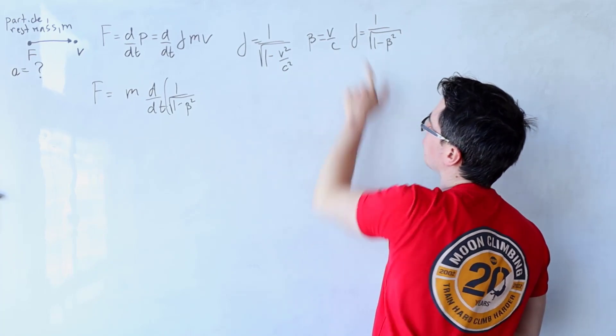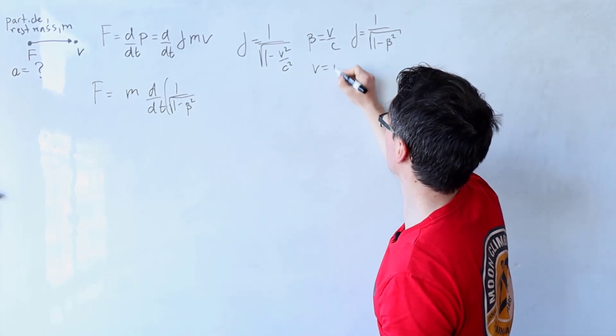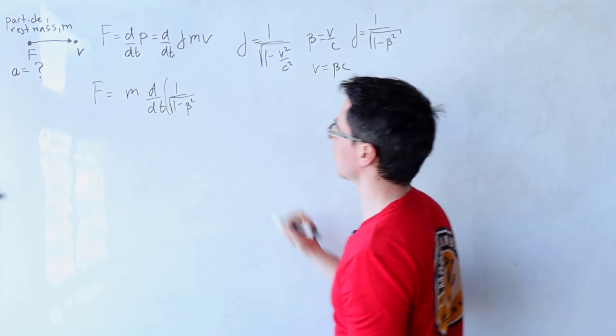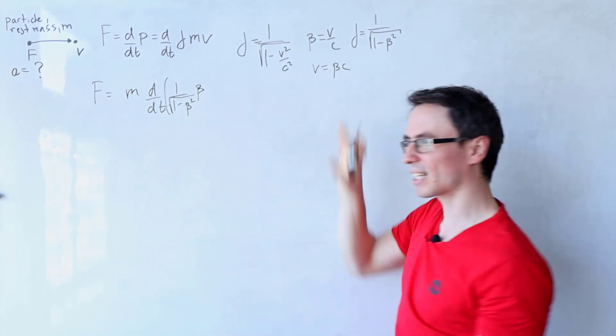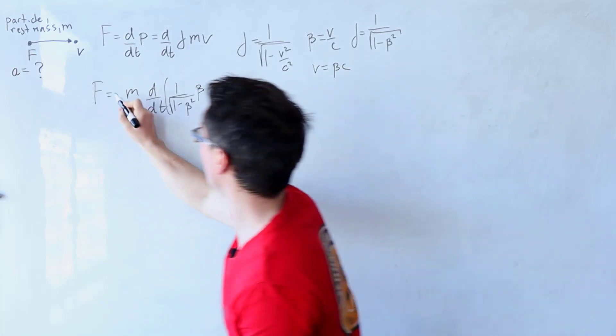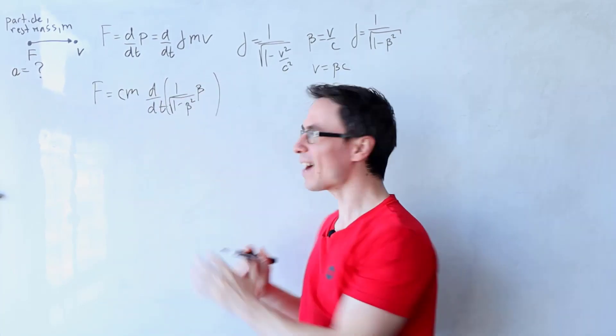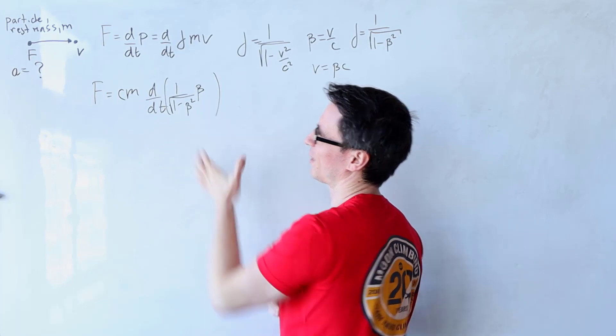And then this is multiplied by v. So beta is v over c, meaning that v will be beta times c. So I'm going to multiply this by beta. And because c is a constant, that is just the speed of light, I'm just going to write this over here.